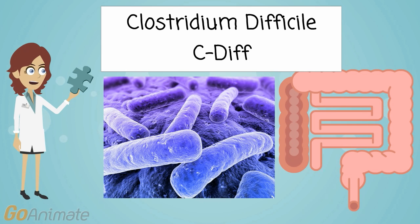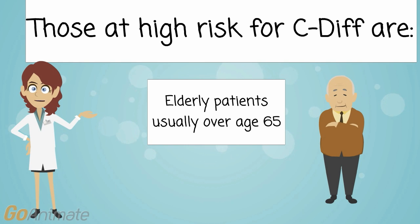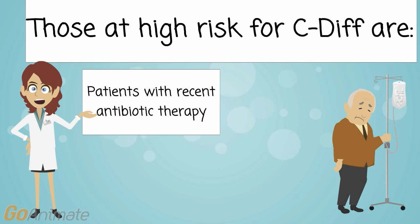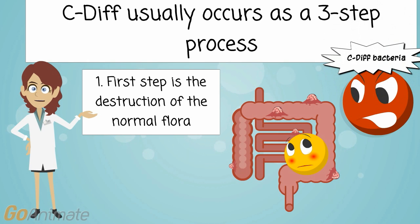C-diff is a bacteria that causes inflammation of the colon, which is called colitis. Toxins produced by C-diff attack the intestinal lining. Those at high risk for C-diff are elderly patients, usually over the age of 65, patients with recent hospitalizations, and patients that have had recent antibiotic therapy. C-diff usually occurs as a three-step process.